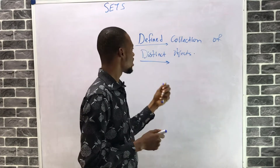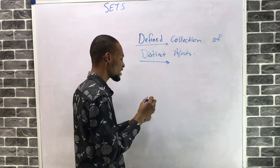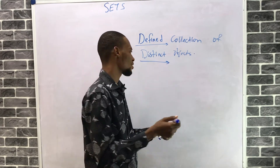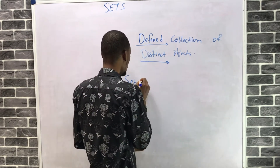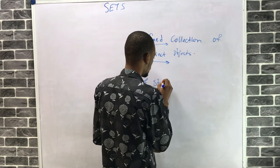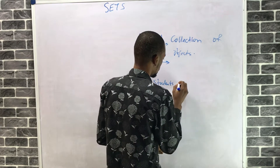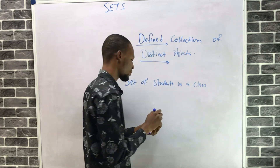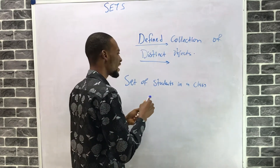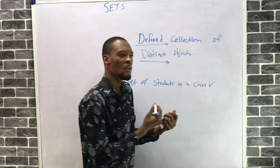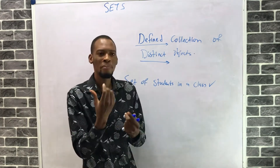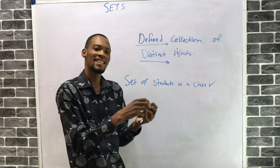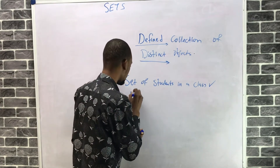If I am specifying a collection of objects, I must define it. For example, 'set of students in a class' — this is defined. Or 'numbers greater than two and less than ten' — this is also defined.